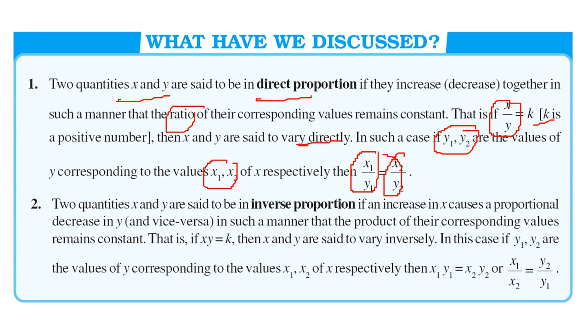In the second case, two quantities x and y are said to be inverse proportion. If the increase in x causes proportional decrease in y in such a manner, the product of their corresponding value remains constant. That is x into y will always be k constant. So x and y are said to vary inversely. So in this case, y1 and y2 are the value of y corresponding to x1, x2 respectively. So we can just say x1 y1 will be equal to x2 y2. So you can say x1 by x2 will be equal to y2 by y1. In this case, x1 by y1 equal to x2 by y2. In this case, x1 by x2 is equal to y2 by y1.